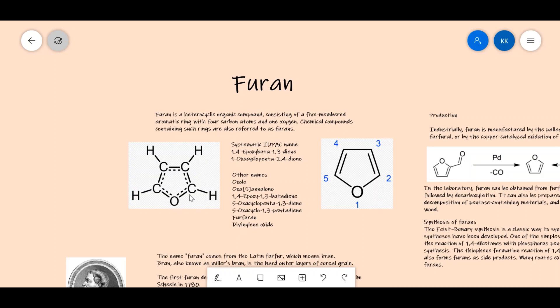It has a heteroatom of oxygen. Chemical compounds containing such rings are also referred to as furans. If another compound has this ring as a component, it is referred to as a furan derivative. It has systematic IUPAC names such as 1,4-epoxybuta-1,3-diene and oxycyclopenta-2,4-diene.